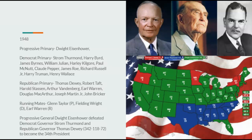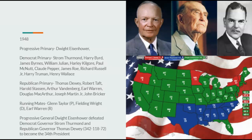Going on to 1948, Progressives would nominate Dwight Eisenhower, Democrats Strom Thurmond, and Republicans Thomas Dewey. Democrats keep nominating Southerners because that's how they win elections — they're afraid of losing Southern support, and Democrats are taking a harder, more rightward stance on segregation. Running mates: Progressive Glenn Taylor, Democrat Fielding Wright, Republican Earl Warren. Progressive General Dwight Eisenhower defeats Democrat Governor Strom Thurmond and Republican Governor Thomas Dewey, 342 to 118 to 72, to become the 34th President.